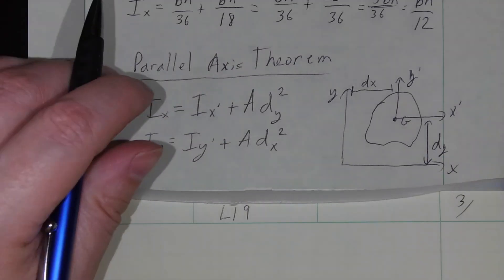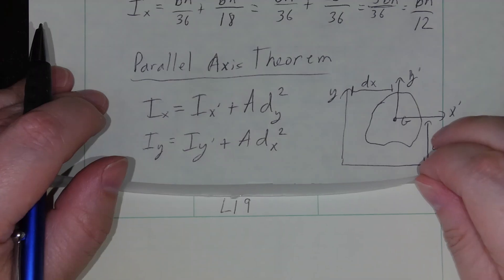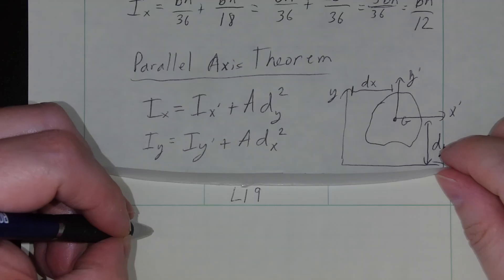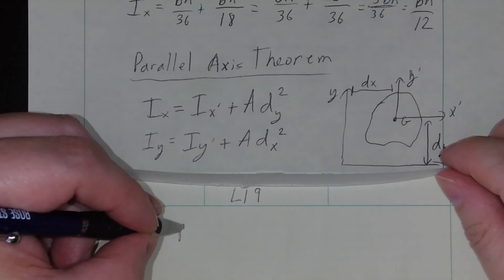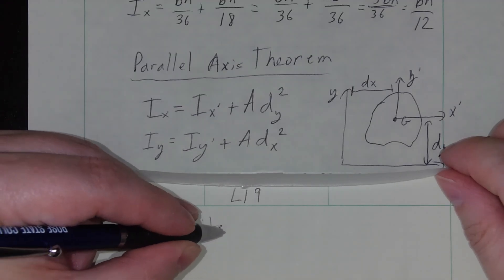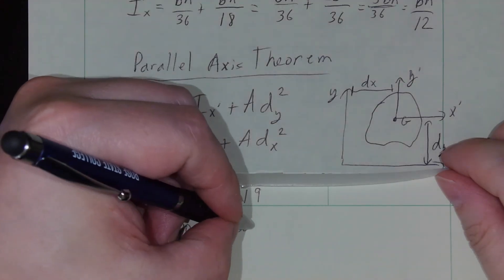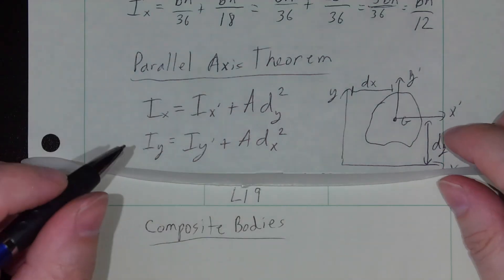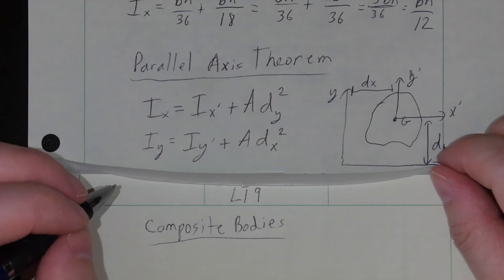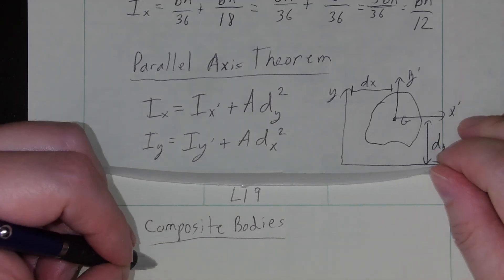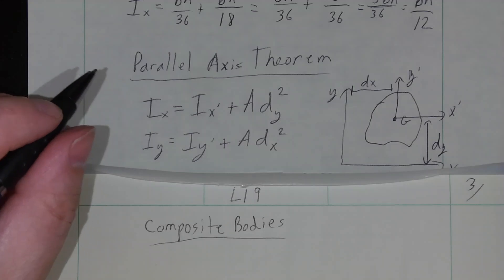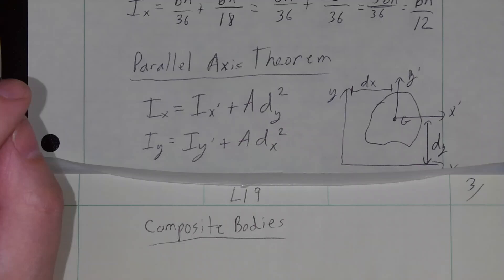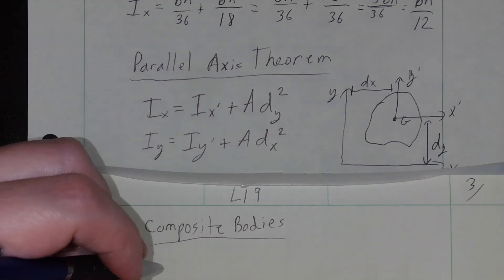Continuing our discussion of moments of inertia, the next topic is composite bodies. Similar to what we saw with centroids, composite bodies is based on the idea that we can compose a larger, more complex object out of smaller, known shapes.